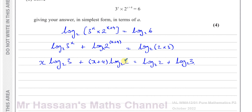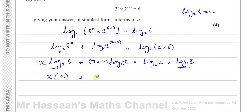Using the power law, I bring the exponents in front: x times log to the base 2 of 3, plus x plus 4 times log to the base 2 of 2, equals log to the base 2 of 2 plus log to the base 2 of 3. Since log to the base 2 of 2 equals 1, the term x plus 4 times log to the base 2 of 2 simplifies to just x plus 4. Now I can replace log to the base 2 of 3 with a wherever it appears.